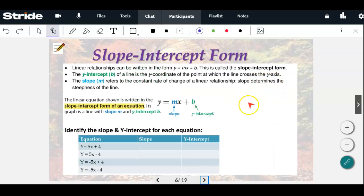Putting it together now, because you're going to have some graphs that don't go through the origin that are called non-proportional ones. Linear relationships can be written in the form of y equals mx plus b. This is called slope-intercept form. The y-intercept is the b. That's where it's going to cross the y-axis. The slope refers to the constant rate of change of the linear relationship. It determines the steepness. Breaking it down, we look at the equation. The m is the slope, b is the y-intercept.